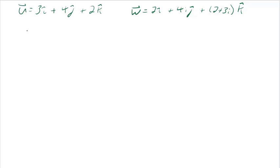You might write it this way then. U represents 3, 4, 2, that column vector. W represents 2, 4i, 2 plus 3i. That's how you would write two vectors using column and row vectors.